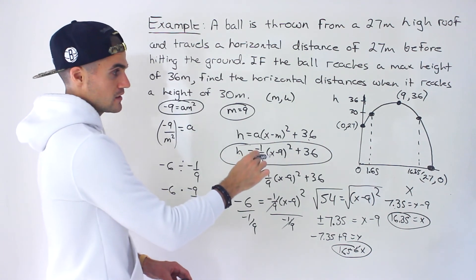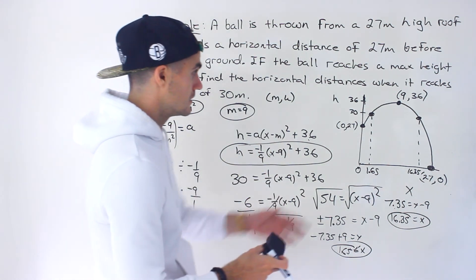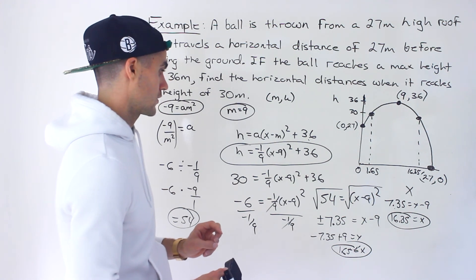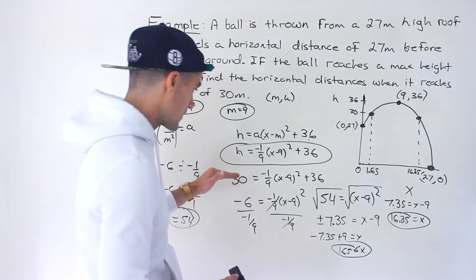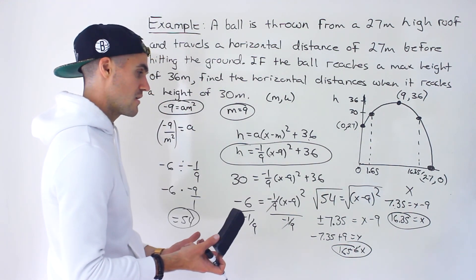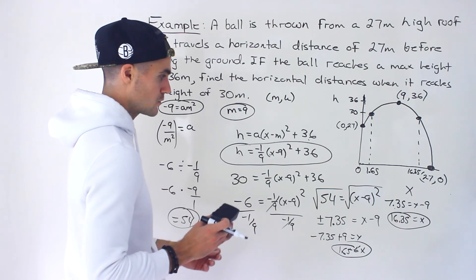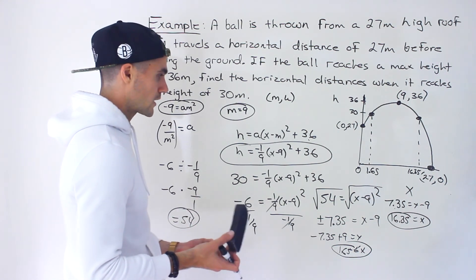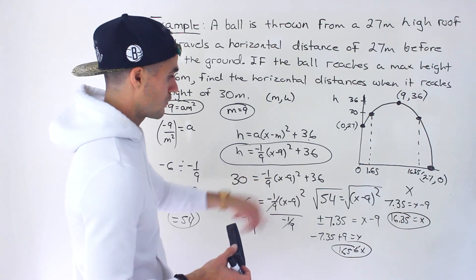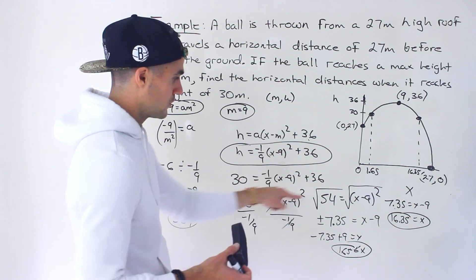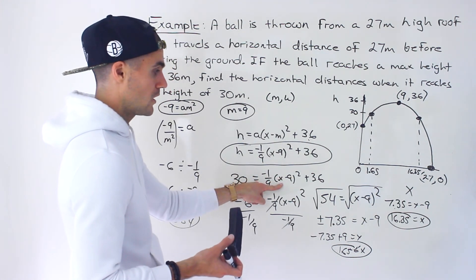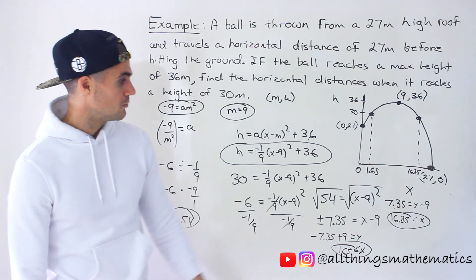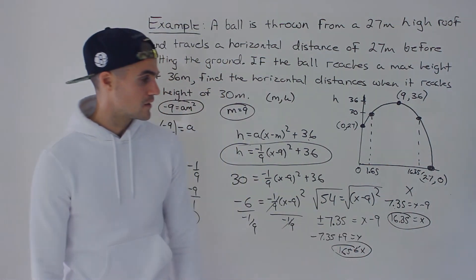You could graph this on a graphing calculator and verify that the height of 30 is reached at those points. You could also solve this by bringing everything to one side, expanding, and using the quadratic formula, but you'd be working with lots of fractions, so I don't recommend that route. So those are the two solutions: the ball reaches a height of 30 meters at horizontal distances of 1.65 meters and 16.35 meters.